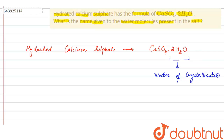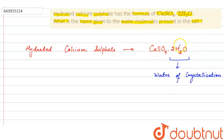Water of crystallization is the name given to the water molecules which are present in one formula unit of the salt. Here we have two water molecules present in one formula unit of calcium sulfate, so we can say that there are two waters of crystallization in hydrated calcium sulfate.